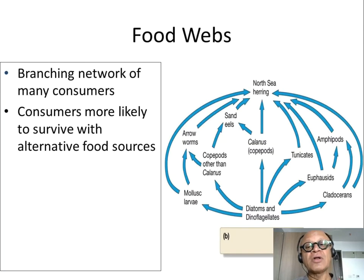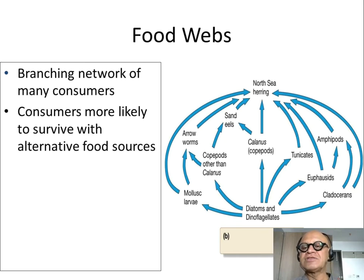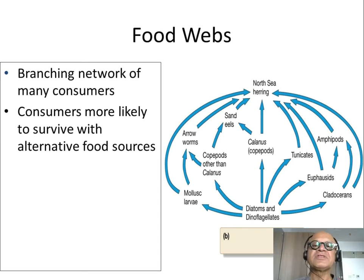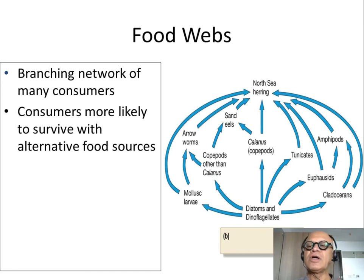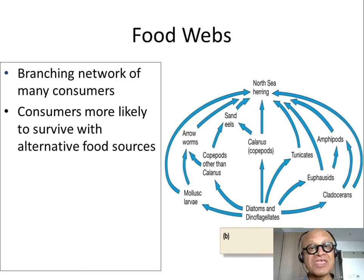In food webs, you have diatoms and dinoflagellates as primary producers at the bottom, eaten by mollusk larvae, copepods (Calanus), tunicates, euphausiids, and cladocerans. They are eaten by arrowworms, sand eels, and so on, leading up to North Sea herring. The Newfoundland herring evolved on a food chain, whereas the North Sea herring evolved on a food web.